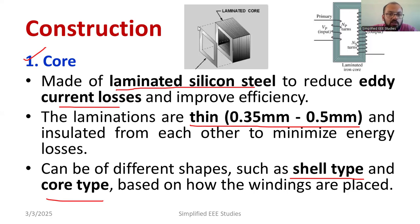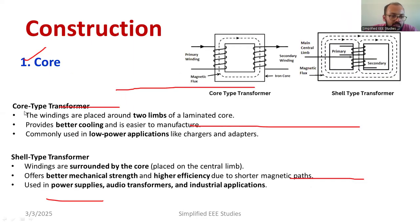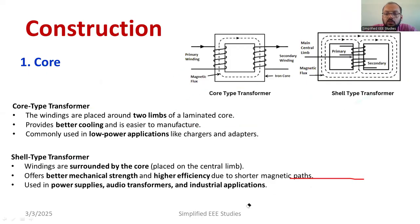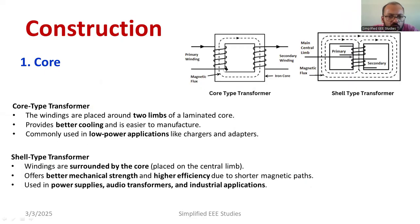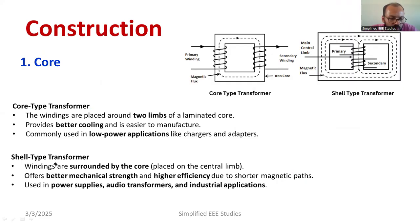There are two types of transformer according to the core construction. One is the core type transformer, which has two limbs as you can observe in the diagram. It provides better cooling and is mainly suitable for low power applications. If you want to go for high power applications, you go ahead with the shell type transformer.